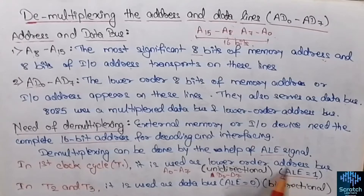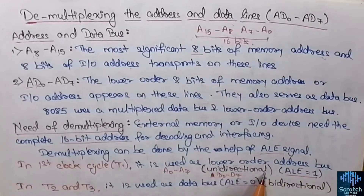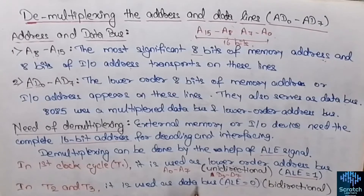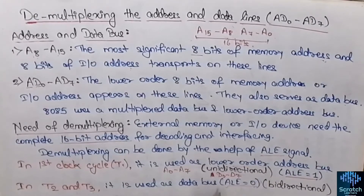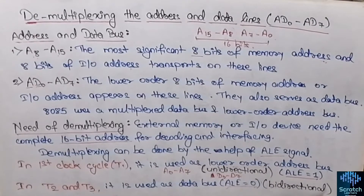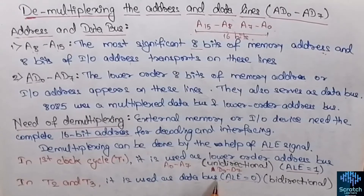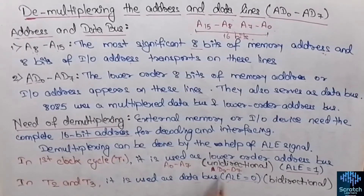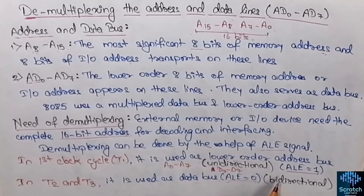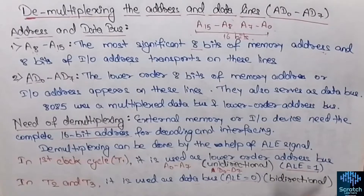One important thing to keep in mind: address lines are always unidirectional, but the data bus or data lines are always bidirectional. This is because data needs to be transferred both from memory to the CPU as well as from the CPU to memory.